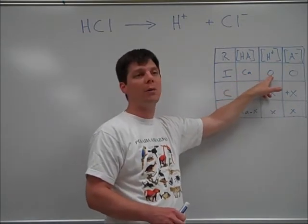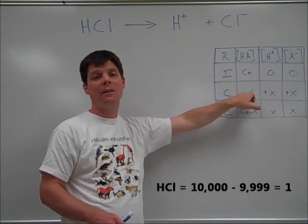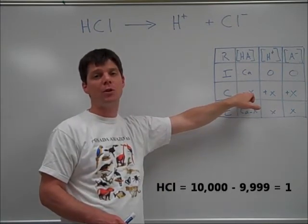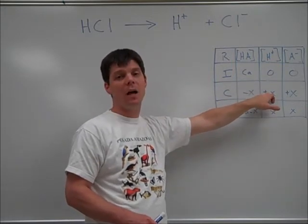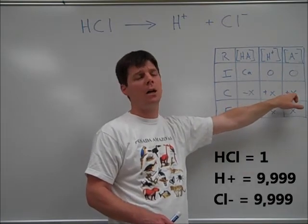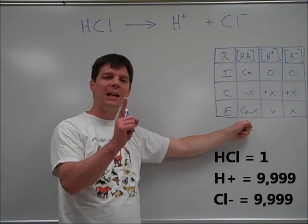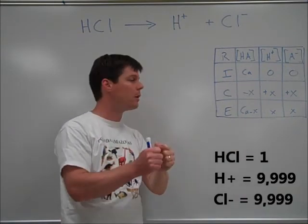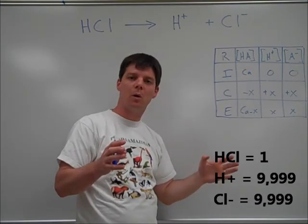We would have zero of both H and A minus. Our change would be that there are 9,999 which are going to be converted. So that's our minus X. We'll wind up with 9,999 gain here, gain of 9,999 here. Our final equilibrium: we will have one remaining HCl which is still bonded together. The remaining 9,999 will have been broken apart.